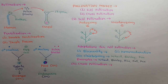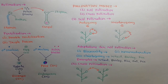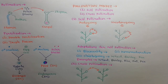Secondly, we will learn about cross-pollination. Transfer of pollen grains from one flower to the stigma of a flower of another plant is called cross-pollination. It is found in both unisexual and bisexual flowers. The main character is that two different plants participate in progeny production. Cross-pollination is divided into four categories based on the transfer agent.